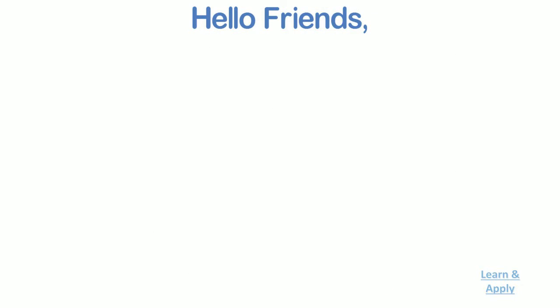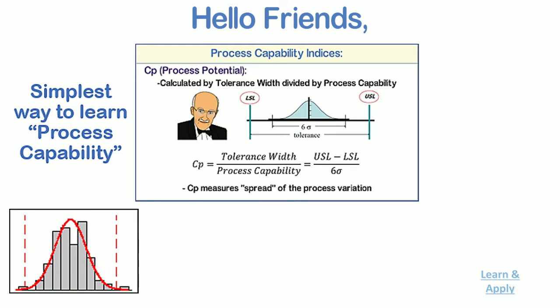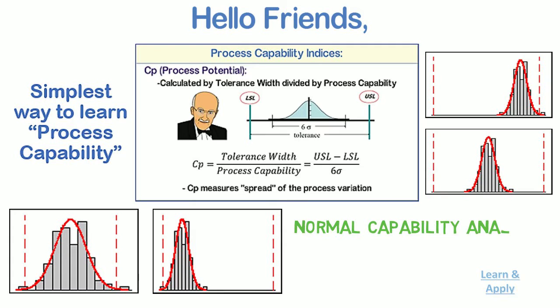Hello friends, in the last video on process capability, we had seen all concepts used in process capability analysis and their meaning with the help of self-explaining graphs for easy understanding and better clarity. We are going to learn the first type of capability analysis, that is, normal capability analysis, with a practical example in this video. So let's begin.